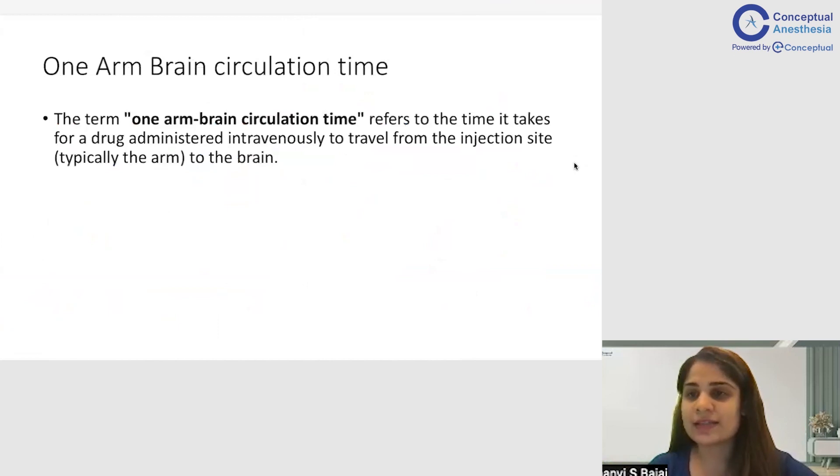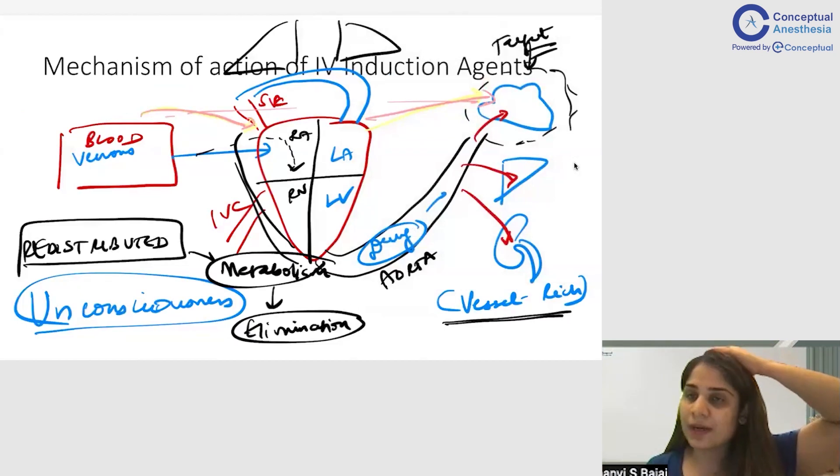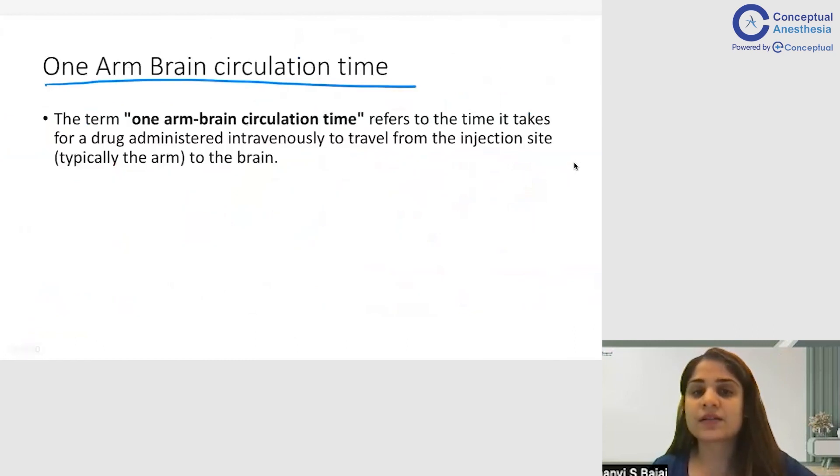Now here there is one very anesthesia related question that comes and your teacher will ask you: what is one arm brain circulation time? So as you know, you gave the drug in the IV. We gave the drug here in the venous blood and from there it has gone to the heart and from there it has reached the brain. So the time that is taken for the drug to reach the brain from the hand, this time is called as one arm brain circulation time. So the time from giving the drug IV till the drug reaches the brain and produces its effect, that is unconsciousness, that is called as one arm brain circulation time.